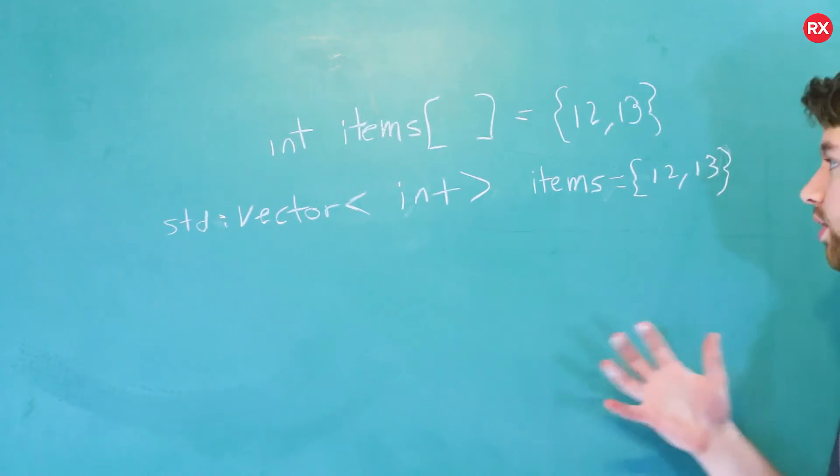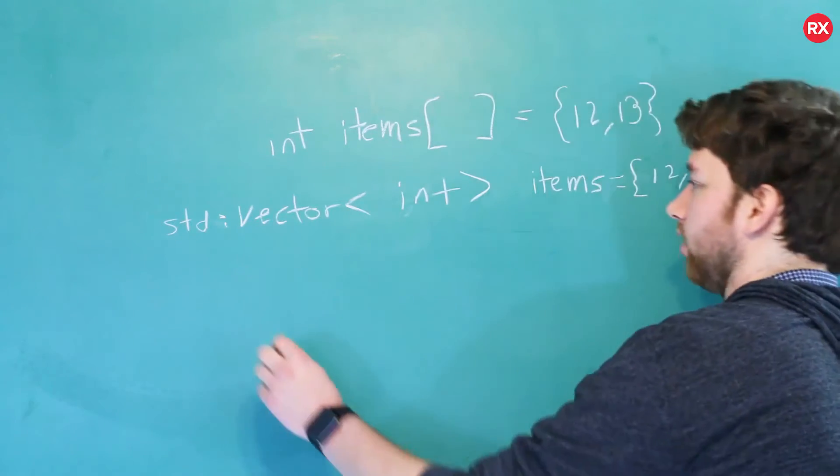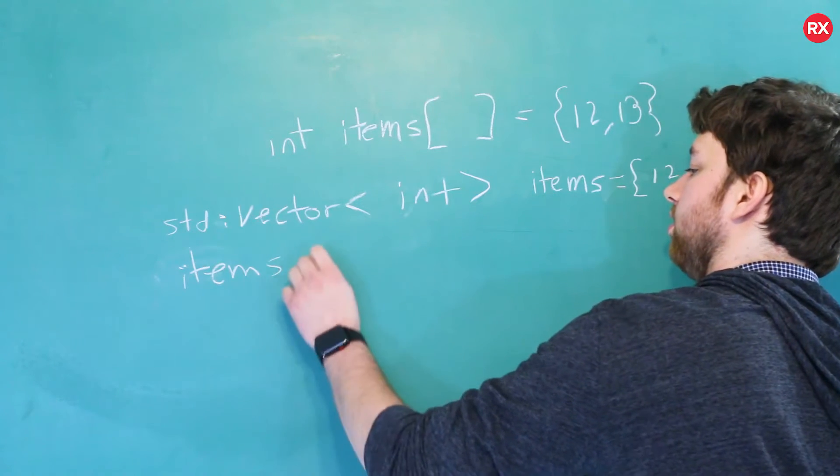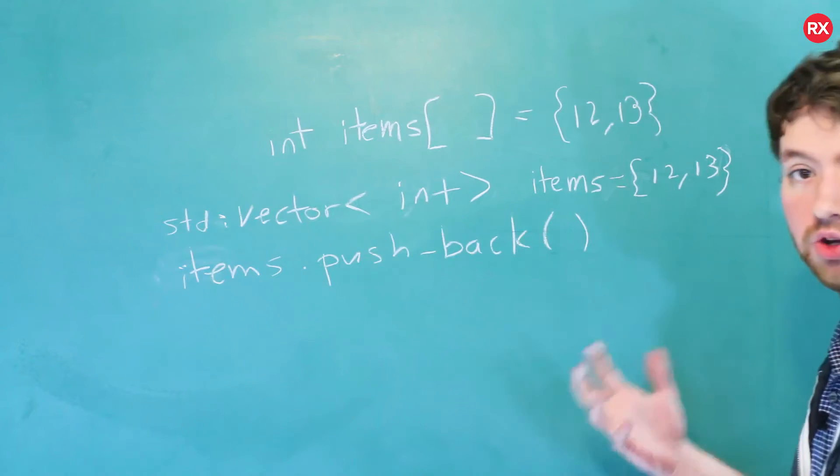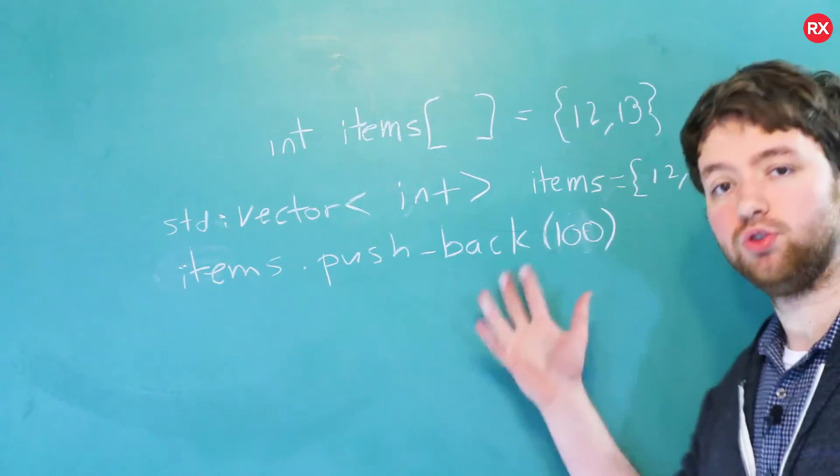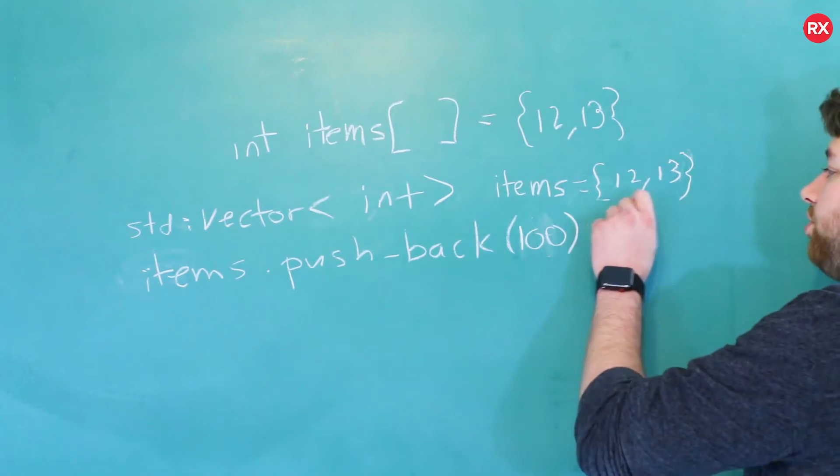A very common way of working with these is to use a special method that comes with vectors, and that would look like this. So for the items vector, you would say items.pushback. And then inside of parentheses is where you would put that value. So in this case, we're adding the value 100 to the vector.